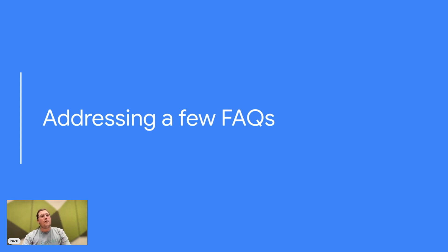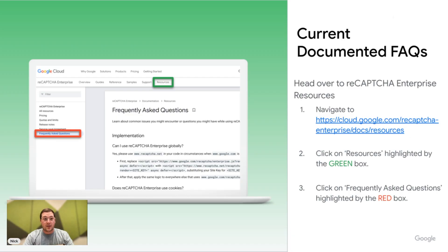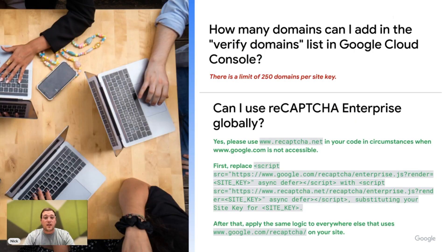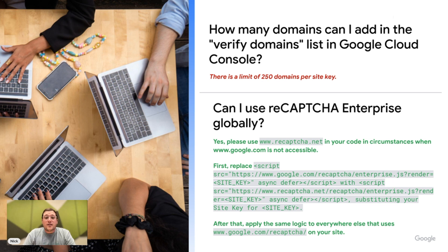Next, I want to address just a few FAQs because chances are you're going to have these questions as you're implementing ReCAPTCHA. All of these FAQs are documented and they live in that same space under 'Resources,' highlighted in green, and then in red are the frequently asked questions. So none of these are undocumented. The first one is: how many domains can I add in the verified domains list in the Google Cloud Console? As of today, there is a limit of 250 domains per site key.